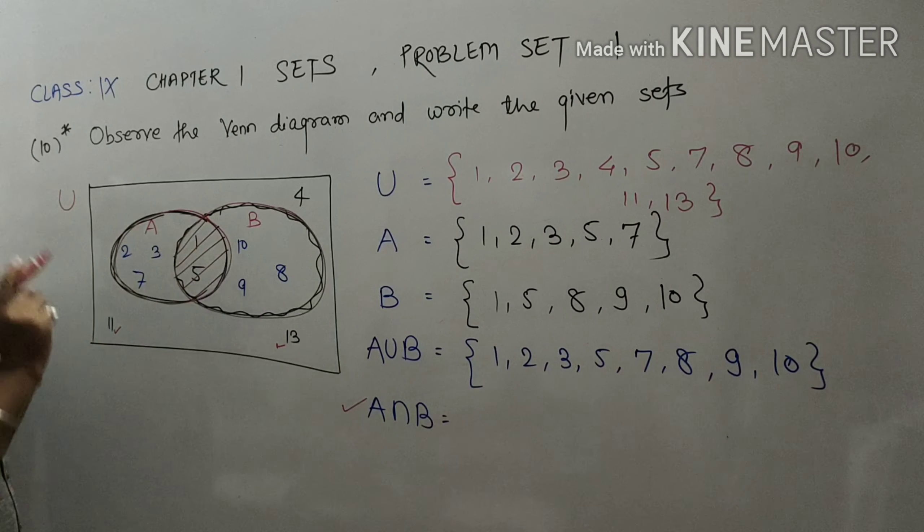Last one is A intersection B. A intersection B means what? This is set A and this is set B. Students, what is common in set A and set B? Common is 1 and 5.